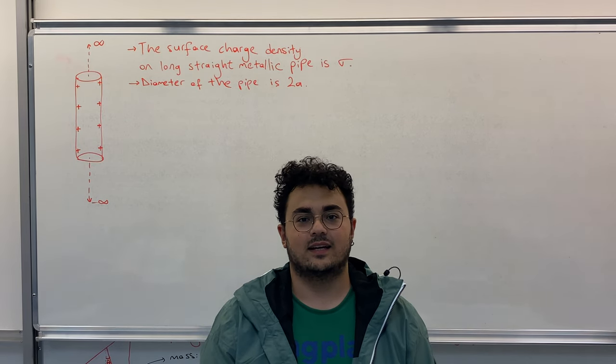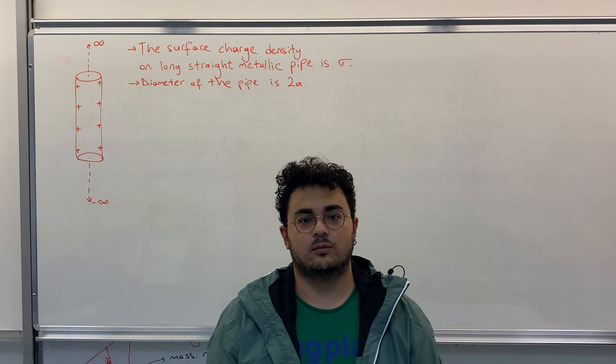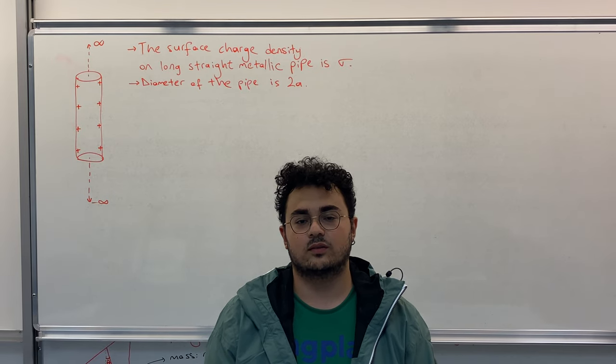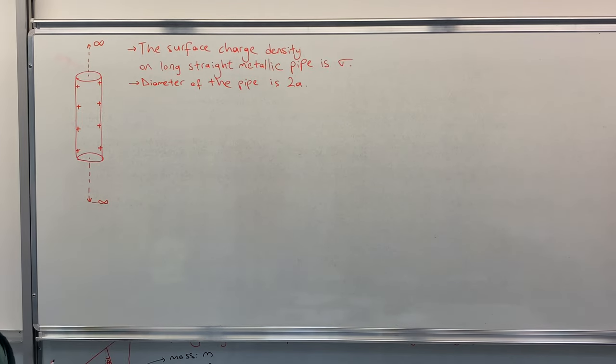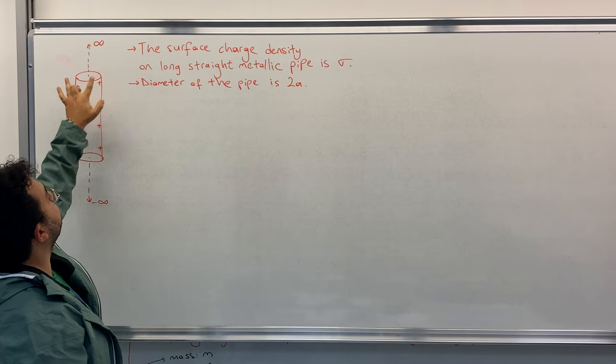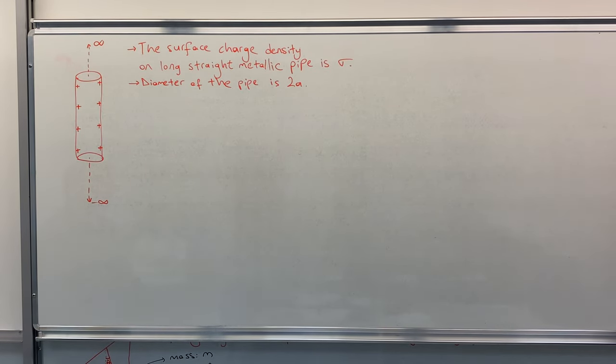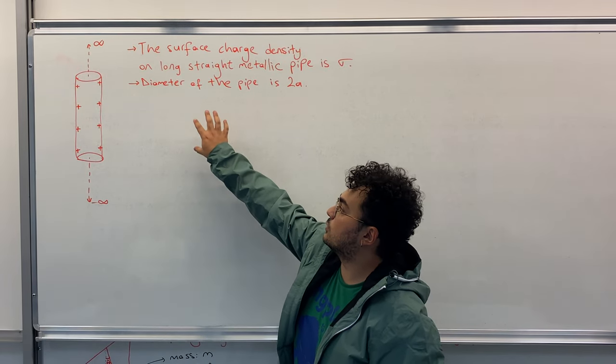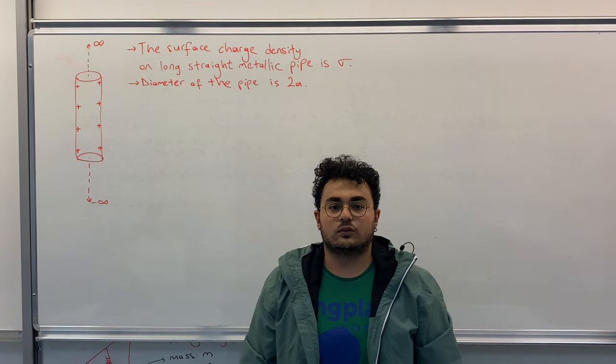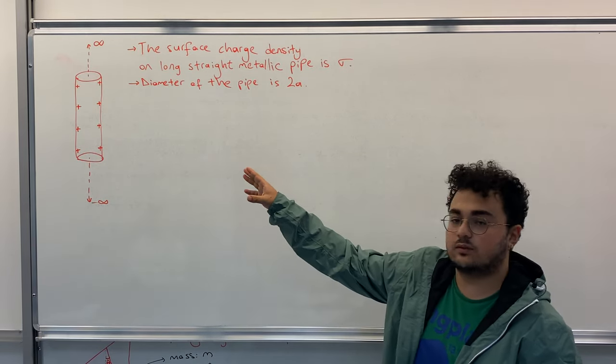Okay, hi guys, I am Boran. In this video I will be solving a couple of questions about Gauss's law. So let's begin. In the first question, we have a really long straight metallic pipe, its diameter is 2a, and the surface charge density is sigma. The question asks us what is the electric field for both outside and inside of the pipe.